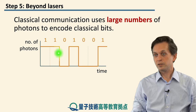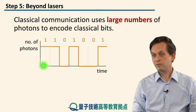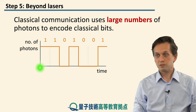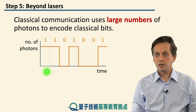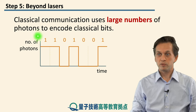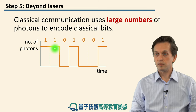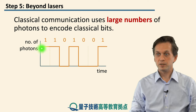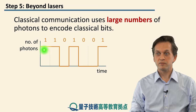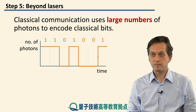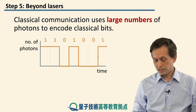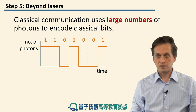On a graph where the horizontal axis represents time and the vertical axis represents the number of photons, all of these ones and zeros — these classical bits — are represented by some very, very large number. And this has a number of advantages.